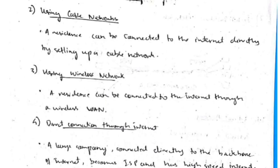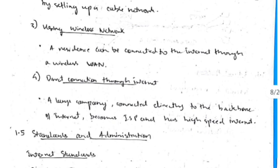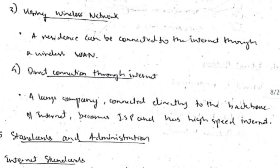The second way of accessing the internet is via cable networks, connecting directly to the internet provider. A WAN can also connect to a wireless network. Large companies can become their own internet providers and get high-speed internet connectivity.